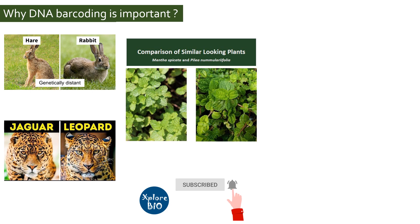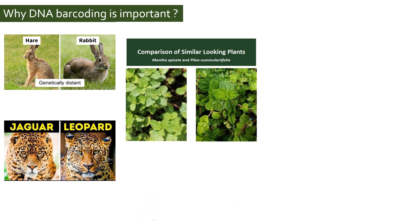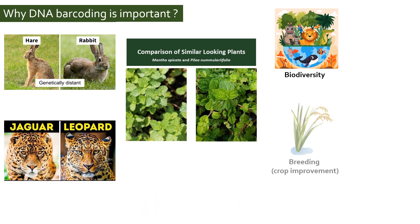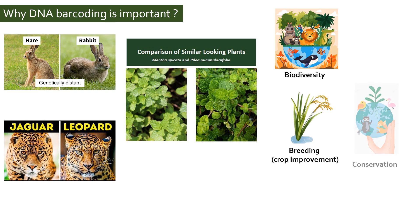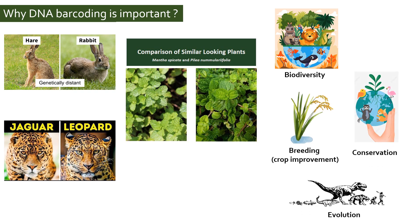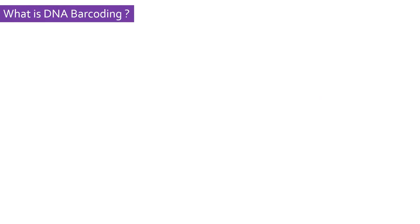And unless the right species is identified, its usage in analyzing biodiversity, breeding for crop improvement, planning conservation strategies, and understanding evolutionary relationships would not be possible. To solve this problem, we have a technique called DNA barcoding.